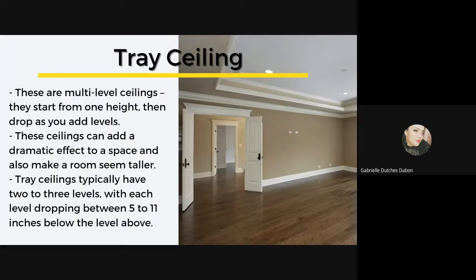Now we have the tray ceiling. Tray ceilings are multi-level ceilings that start from one height and then drop as you add levels. The seating layout resembles a tray — the flat ceiling on the outside surrounds the raised center, which is the highest point. Also known as pan ceilings, they become slightly lower with each added step, creating a three-dimensional effect. These ceilings can add a dramatic effect and make a room seem taller. Pan ceilings typically have two or three levels, with each level dropping between five to eleven inches below the level above.